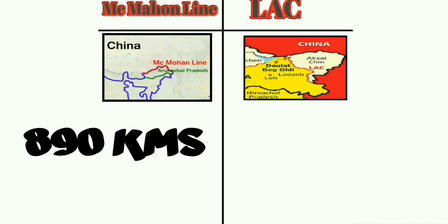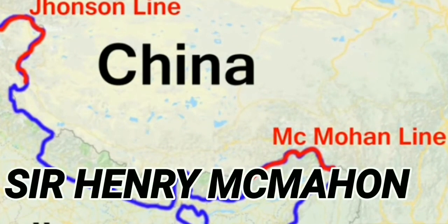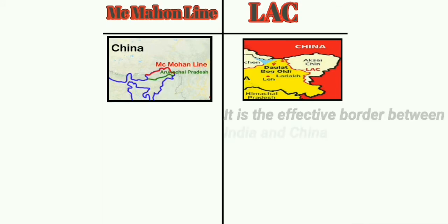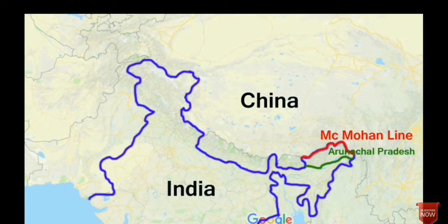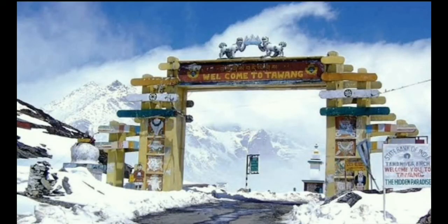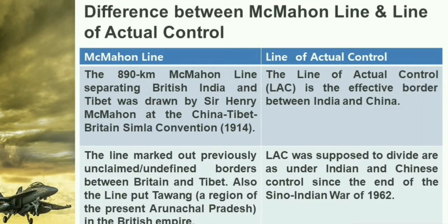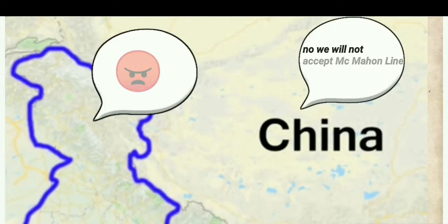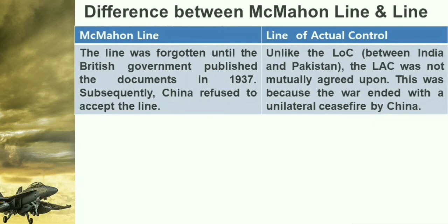Now let's see the differences between the McMahon Line — the rightful national border according to India — and the Line of Actual Control. The 890-kilometer McMahon Line separating British India and Tibet was drawn by Sir Henry McMahon at the China-Tibet-Britain Shimla Convention of 1914. The McMahon Line marked out previously unclaimed and undefined borders between Britain and Tibet, and put Tawang, a region of present-day Arunachal Pradesh, in the British Empire. The LAC was supposed to divide areas under Indian and Chinese control since the end of the Sino-Indian War of 1962. The McMahon Line was forgotten until the British government published documents in 1937; subsequently China refused to accept that line. Unlike the LOC between India and Pakistan, the LAC was not mutually agreed upon, because the war ended with a unilateral ceasefire by China.